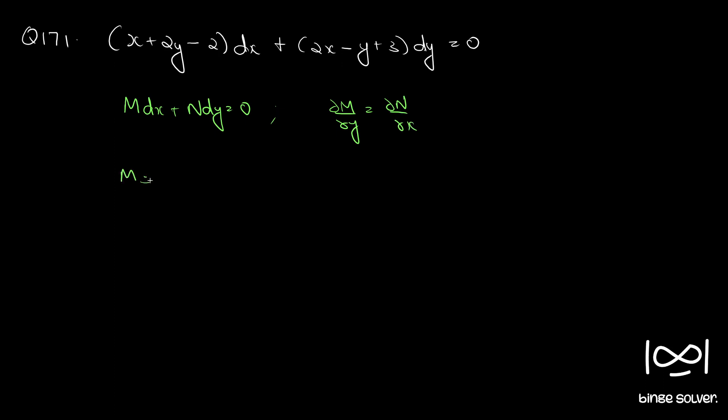Here m is x plus 2y minus 2 and n is 2x minus y plus 3.